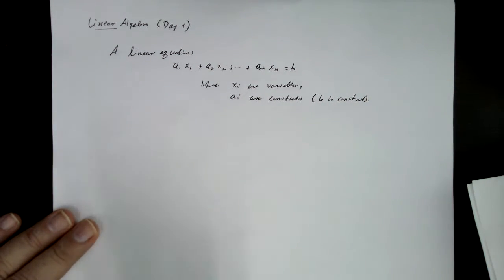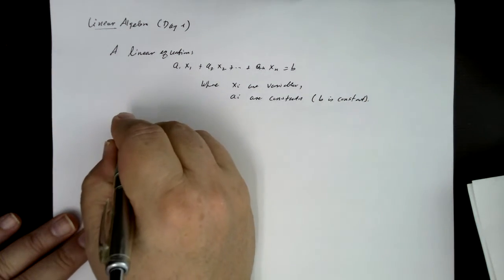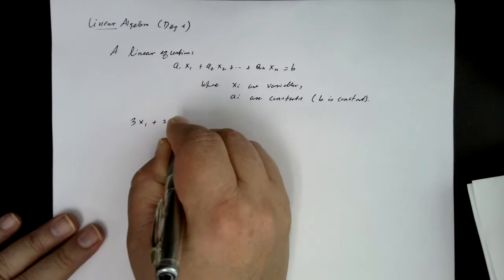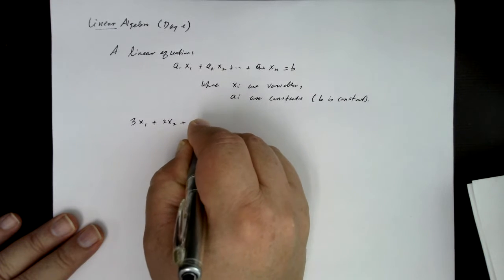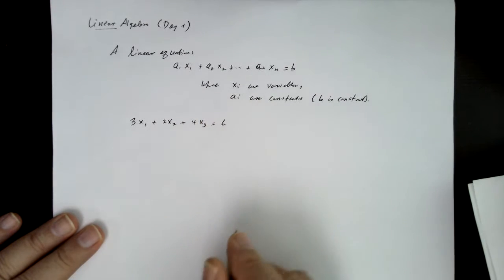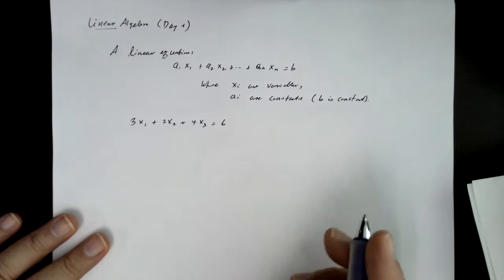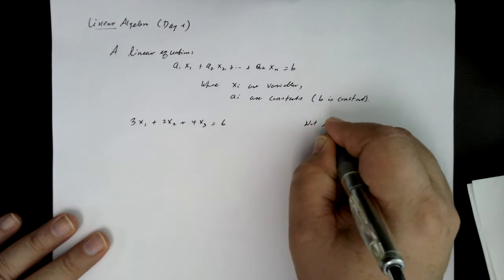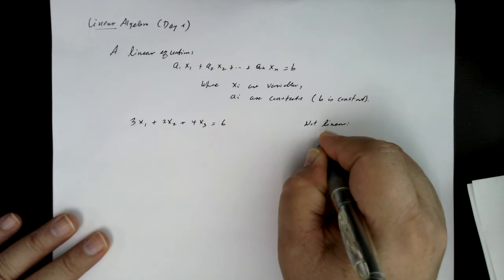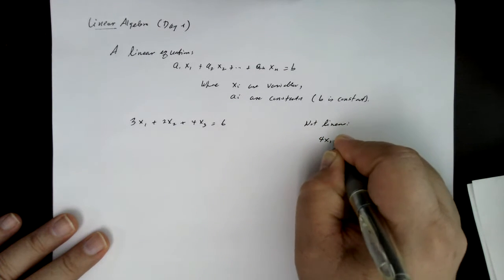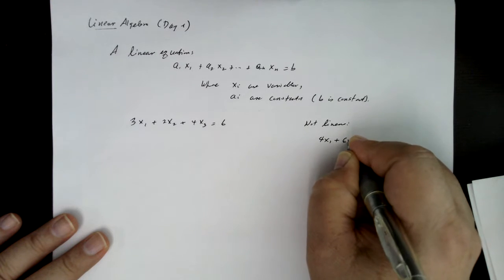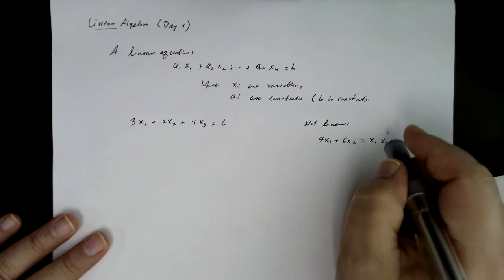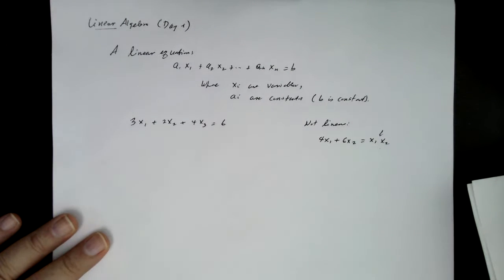So an example of a linear equation would be like 3x1 plus 2x2 plus 4x3 equals 6. Not linear would be an example like 4x1 plus 6x2 equals x1 times x2. This product here would make this a non-linear equation.